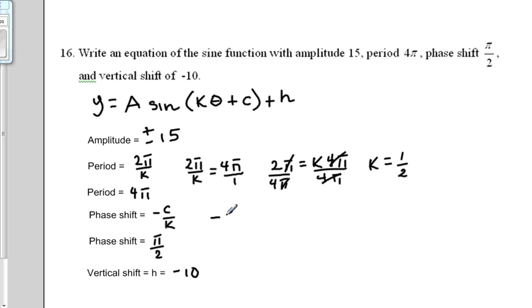So let's write negative c over 1 half equals π over 2. Alright, so once again, we are going to cross multiply this way. It's pretty simple. Negative c times 2 is negative 2c. Alright, this way is not too difficult either. 1 half times π is simply π over 2.